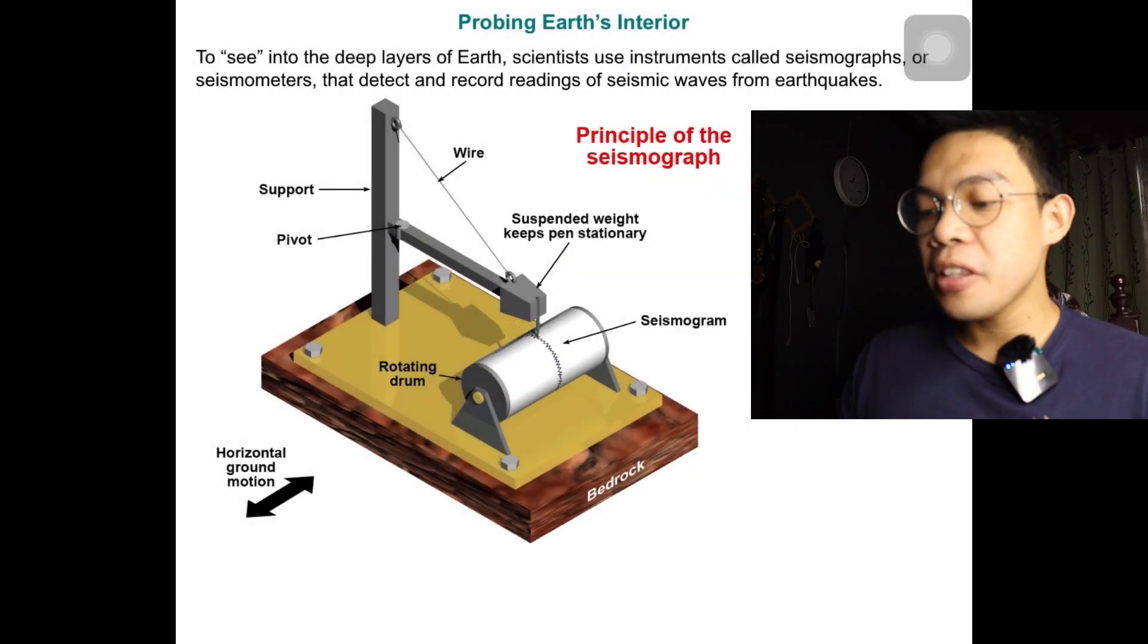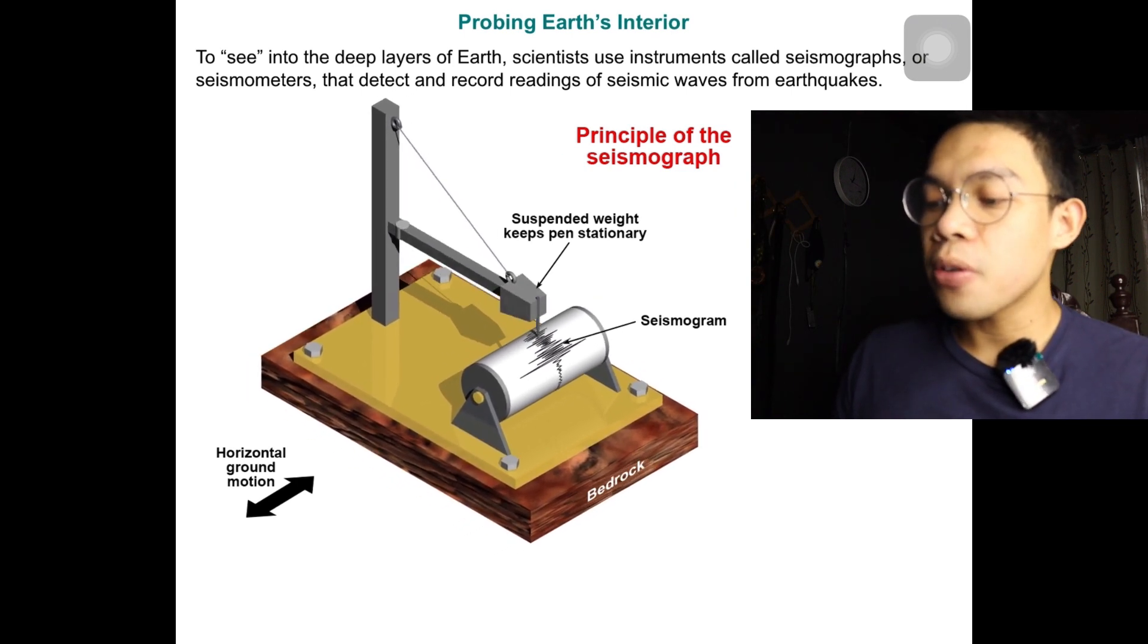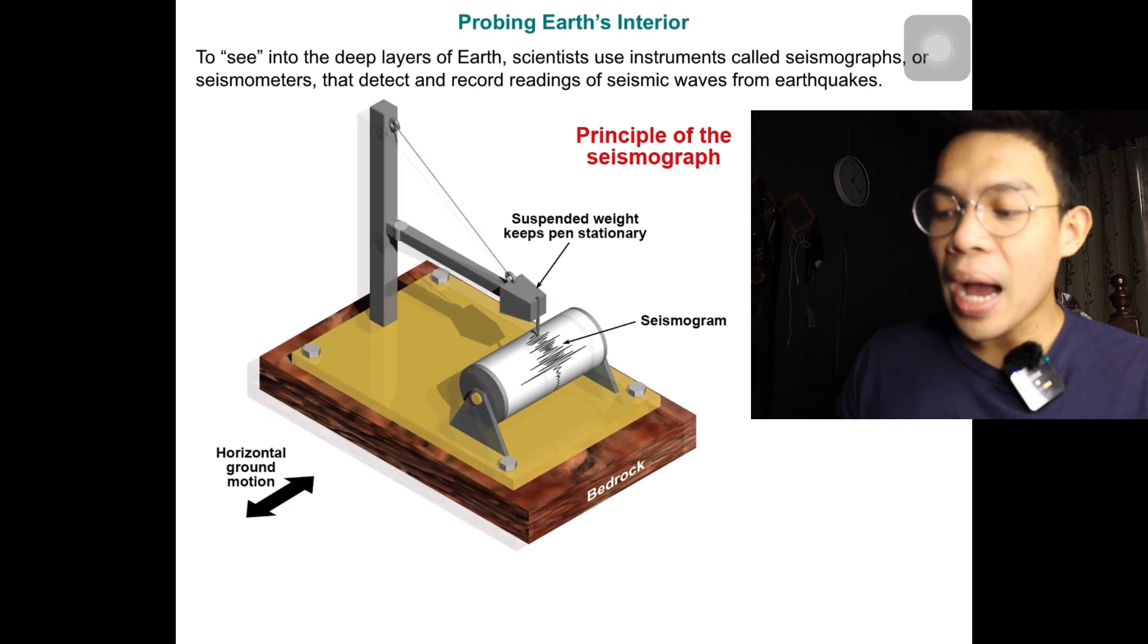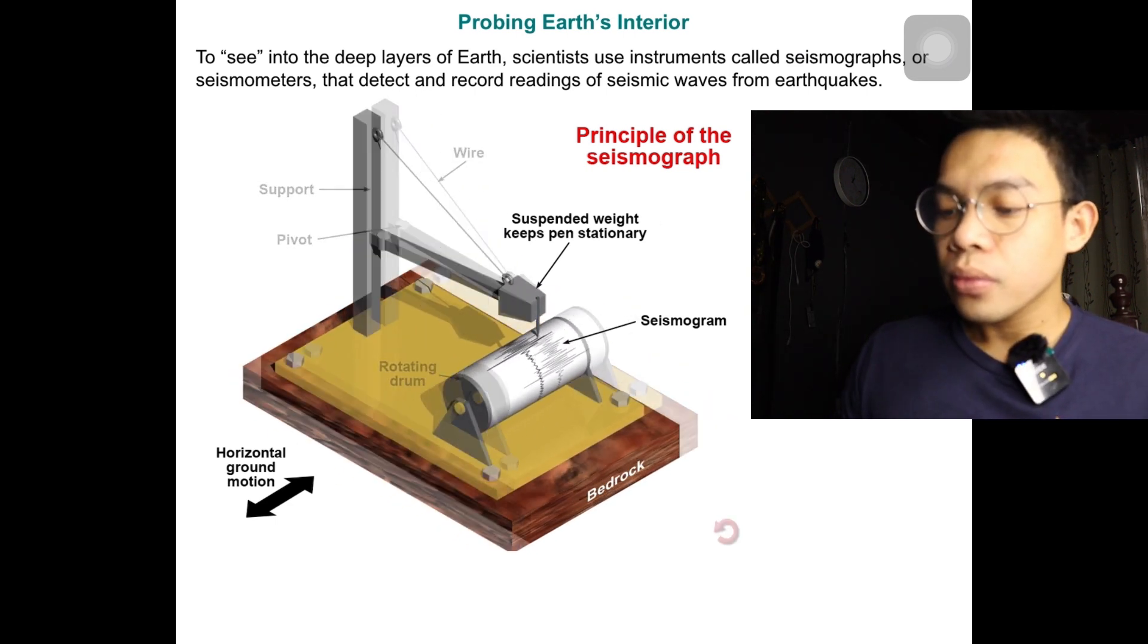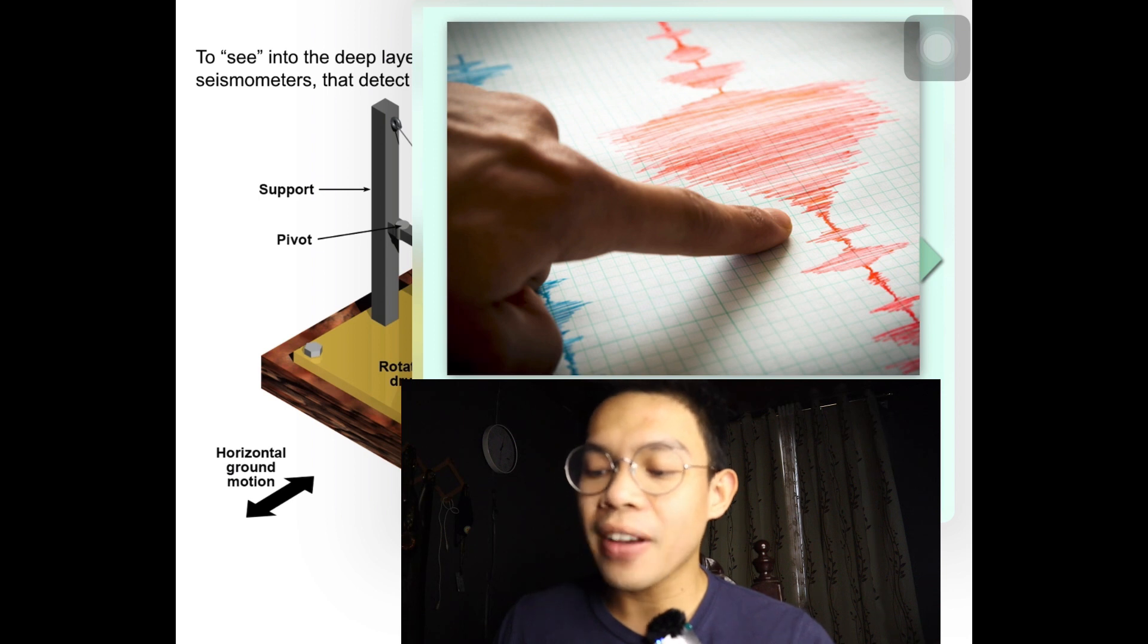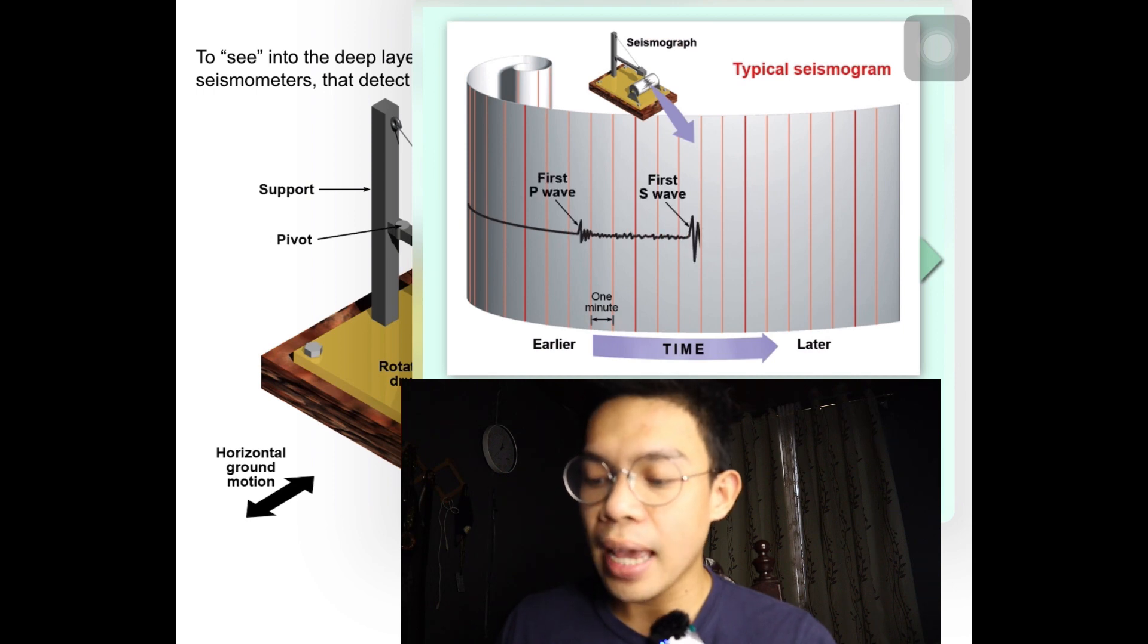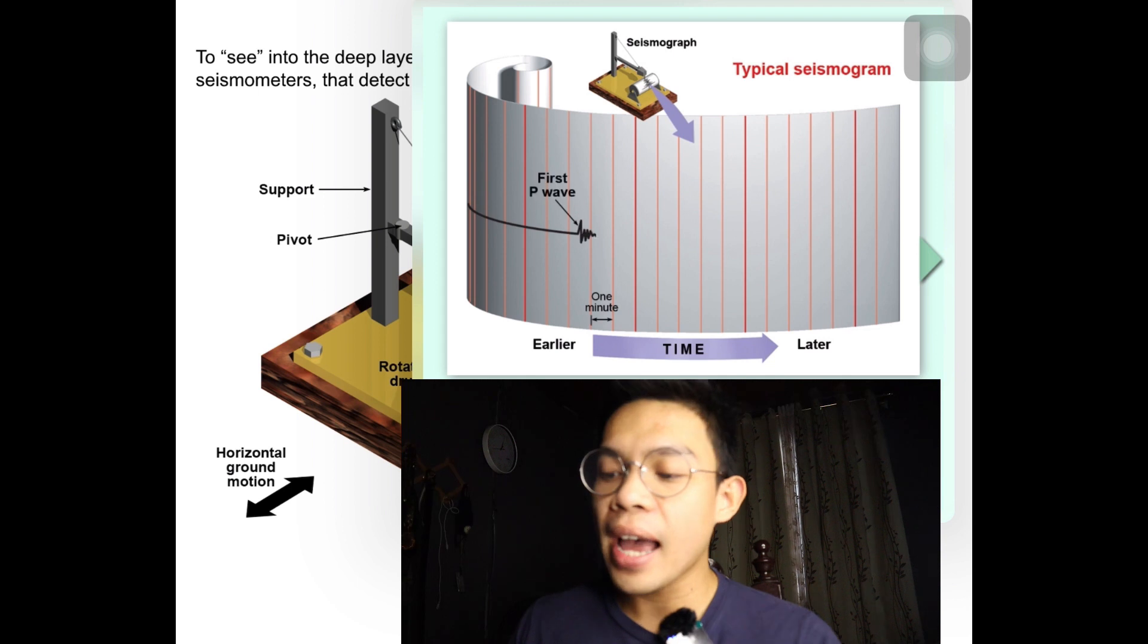Probing the Earth's interior: Seismographs, or seismograms, record information about different types of waves. In a sample seismograph, P waves appear to be the fastest, about 70% faster than S waves. Surface waves are the slowest, about 10% slower than S waves, and have the highest amplitude or height.